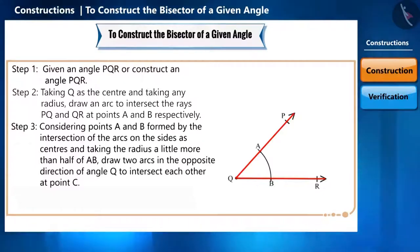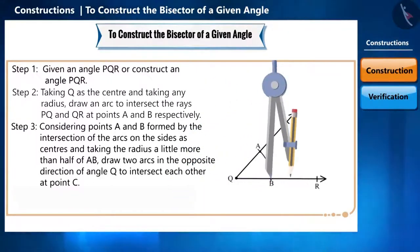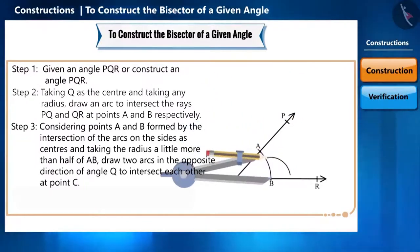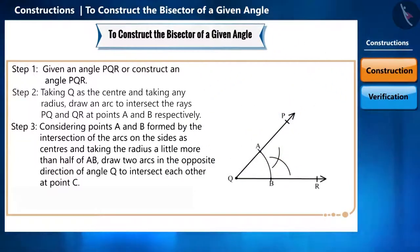Considering points A and B formed by the intersection of the arcs on the sides as centres and taking the radius a little more than half of AB, draw two arcs in the opposite direction of angle Q to intersect each other at point C.